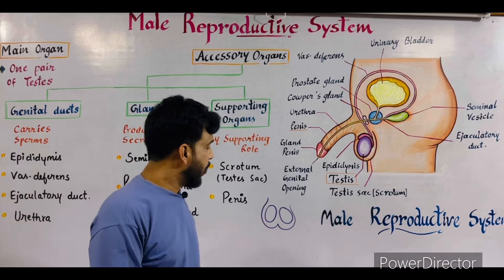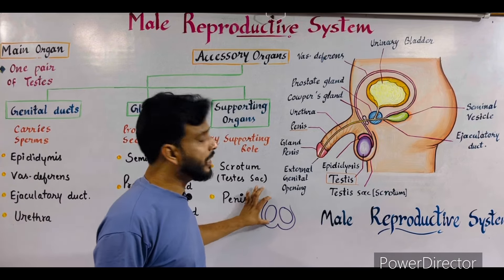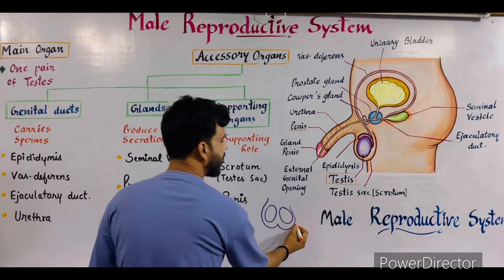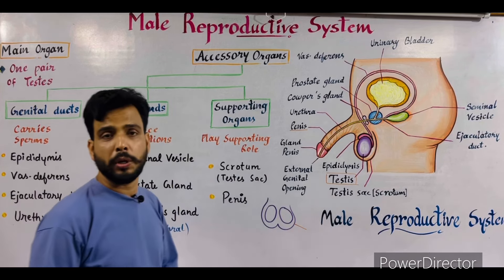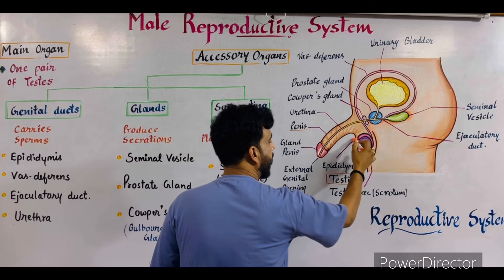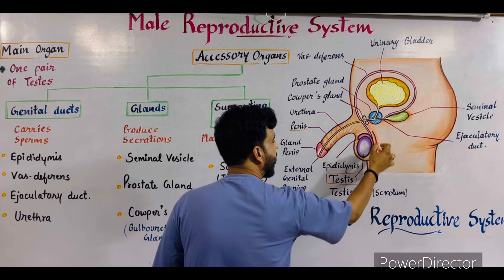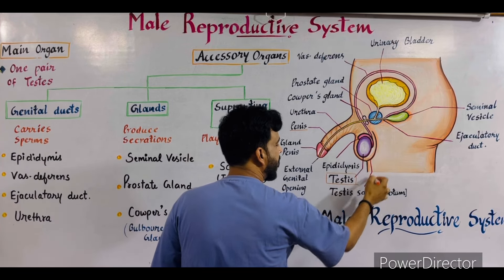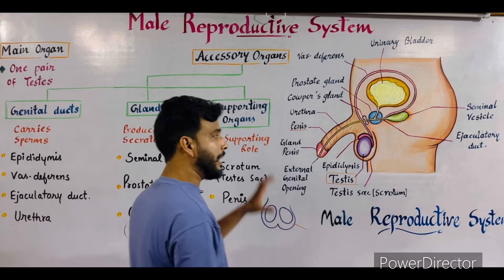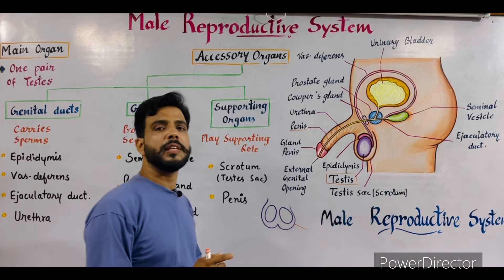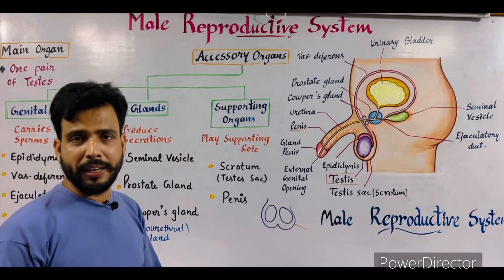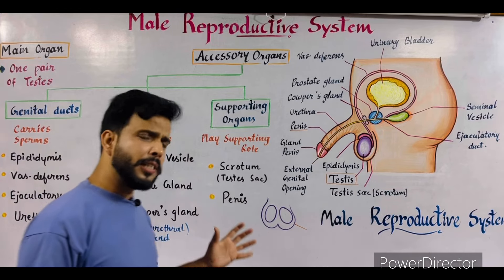The testes are situated inside a bag-like structure which is known as the testis sac or scrotum. As you can see in this diagram, this is the testes and this is the bag-like structure known as the testis sac or scrotum. Inside the testis sac, one pair of testes are situated outside of the abdominal cavity.